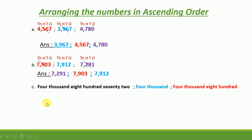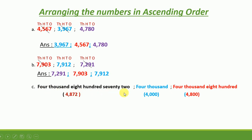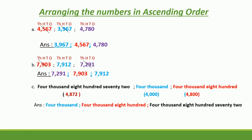Can you see another example? The numbers are written as number names. Let us find the number for each one and arrange from smallest to greatest. The first number is 4,872, the second is 4,000, and the third is 4,800. Let us write the numbers from smallest to greatest.